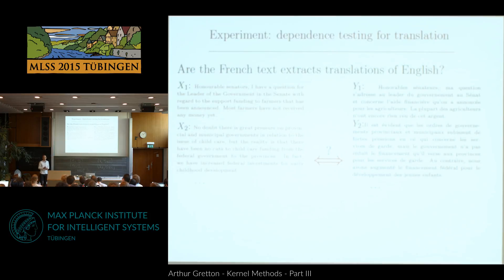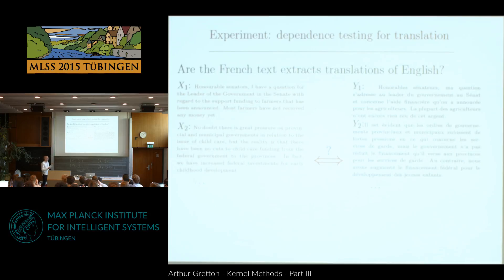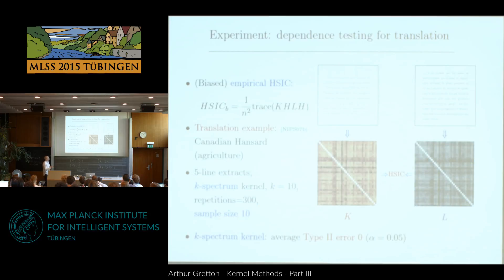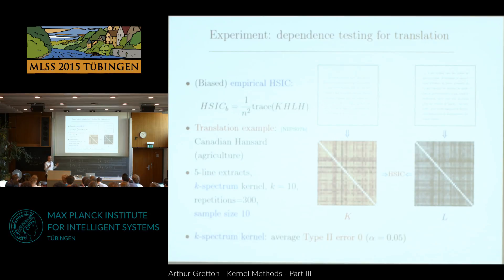Remember the problem from the first lecture: I've got fragments of text in English and fragments of text in French, and I want to decide whether there is dependence between these fragments — even if I don't speak English or French. Now that I've described a dependence statistic, let's see how it does. My statistic is the dot product between centered K and L matrices, where K is the matrix of similarities between all pairs of English text, and L is the matrix of similarities between all pairs of French text.